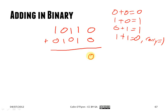So 0 plus 0 is 0. 1 plus 1 is 0 with a carry of 1. And just like in decimal with the carry, you just add it on. So 1 plus 1 is again 0 with a carry of 1. 1 plus 1 is 0, carry of 1. 1 plus 1 is 0, and then your carry of 1. So as you can see, it's the exact same sequence of events as you would with normal numbers.